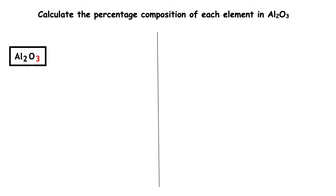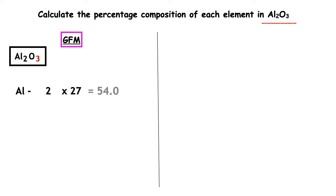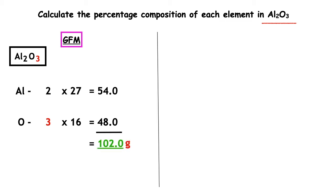Example number 2: calculate the percentage composition of each element in Al₂O₃. We first have to calculate the GFM. Aluminium — how many do we have in the formula? We have 2, times by the relative atomic mass, which is 27. 2 times 27 equals 54. Oxygen — how many do we have in the formula? We have 3, times by the relative atomic mass, which is 16. 3 times 16 equals 48. 54 plus 48 gives us a GFM of 102 grams.